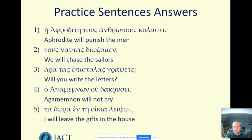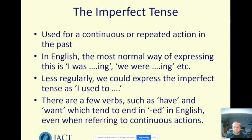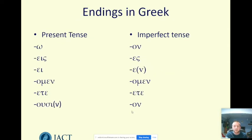We've now covered the future tense; let's have a look at the imperfect tense next. This is used for continuous, repeated, or ongoing action in the past. The vast majority of the time in English we represent this as 'I was jumping,' 'we were playing,' and so on. Less regularly we could use 'I used to eat,' for example. And then there are very few verbs in English — 'have,' 'want,' 'like' — where we don't use the imperfect form at all and just put '-ed' on: 'I had a dog last year,' rather than 'I was having a dog last year,' which sounds strange.